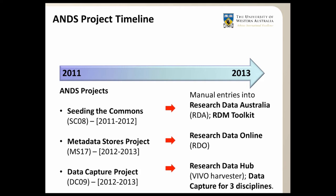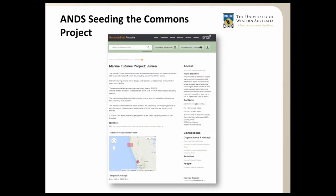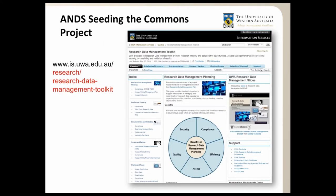I will now give a brief overview of the three ANDS projects, which we have now completed. Starting with the Seeding the Commons project, it involved the creation of at least 50 collections in the Australian Research Data Commons. With the ANDS funding, UWA hired its first research data librarian, and I manually entered these collections into RDA and through to the ANDS registry. The project also involved creating training materials and data management guidelines, now available as a LibGuide titled the Research Data Management Toolkit.